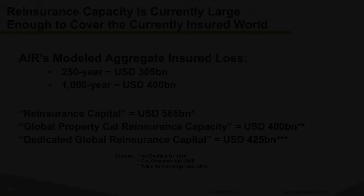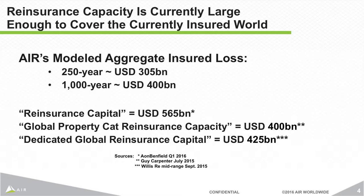To contrast that, here is the availability of reinsurance capital in the world. Running all the models in our global suite, we get aggregate insured losses of around 300 billion at the 250-year level and around 400 billion at the 1000-year level. Comparing that with available capital currently in the market — provided by the largest reinsurance broking houses in the world — reinsurance capacity is currently large enough to cover the currently insured world. The emphasis is on 'currently insured.'